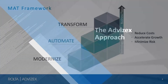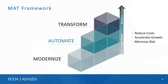The AdviseX approach starts with a Modernize phase, then Automate, then Transform — we call that MAT. During these phases, companies from an IT perspective typically start at a technology focus area. As they move further up towards the Transform phase, they become more business-focused in terms of further enabling business agility.